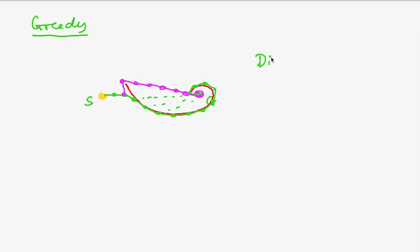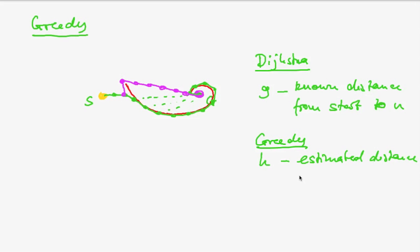So you see our Dijkstra algorithm uses g, the known distance from the start to n, whereas our greedy algorithm uses h, an estimate of the distance to the goal. And Dijkstra expands many nodes, whereas the greedy algorithm expands fewer nodes.